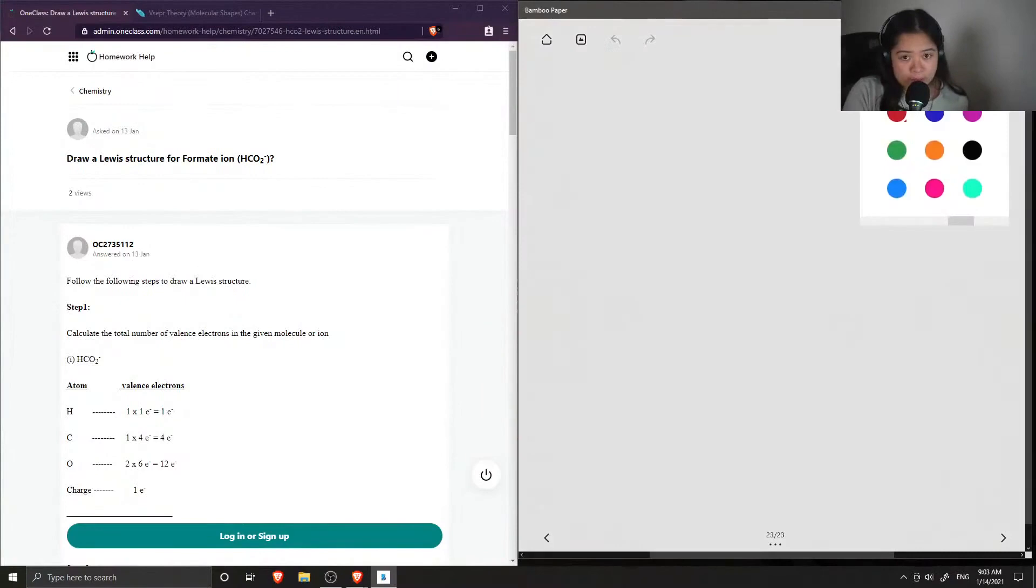Okay, so question number four is draw a Lewis structure for formate ion.